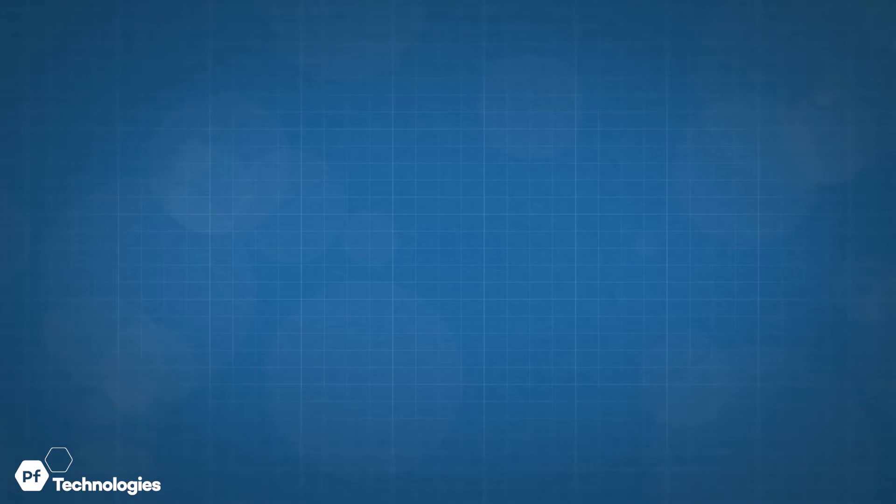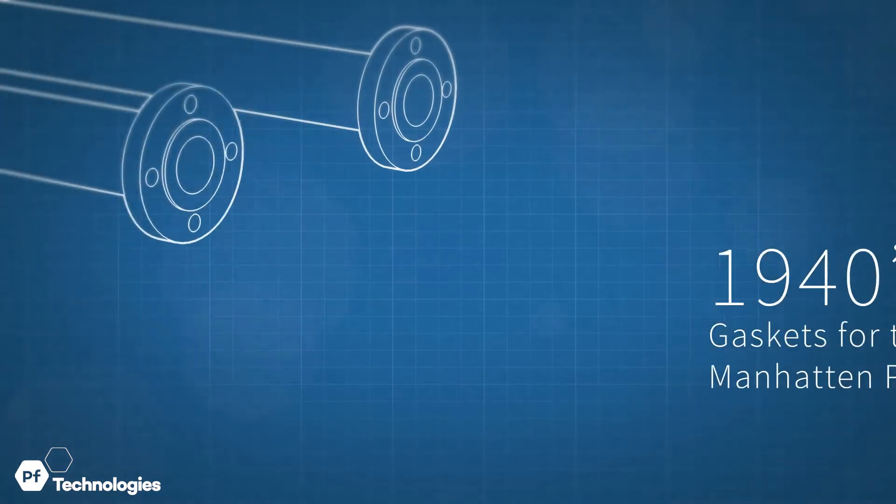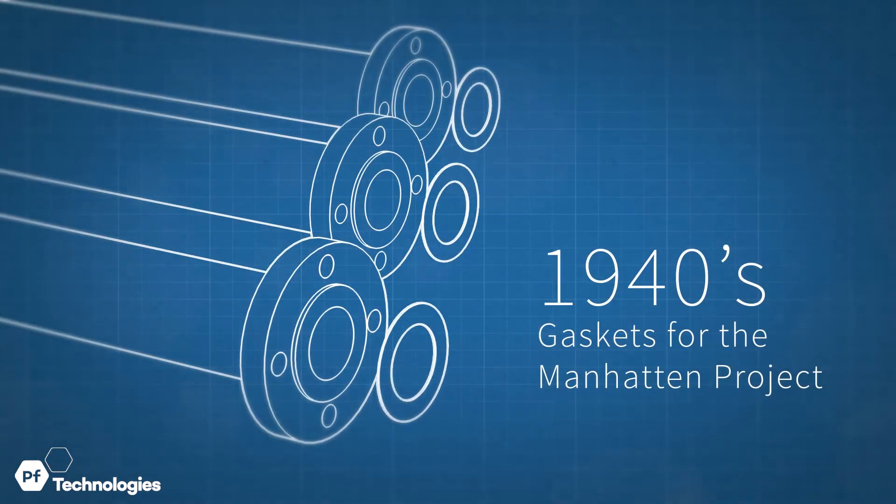Because of these unique attributes, fluoropolymer gaskets were used in uranium processing for the Manhattan Project.